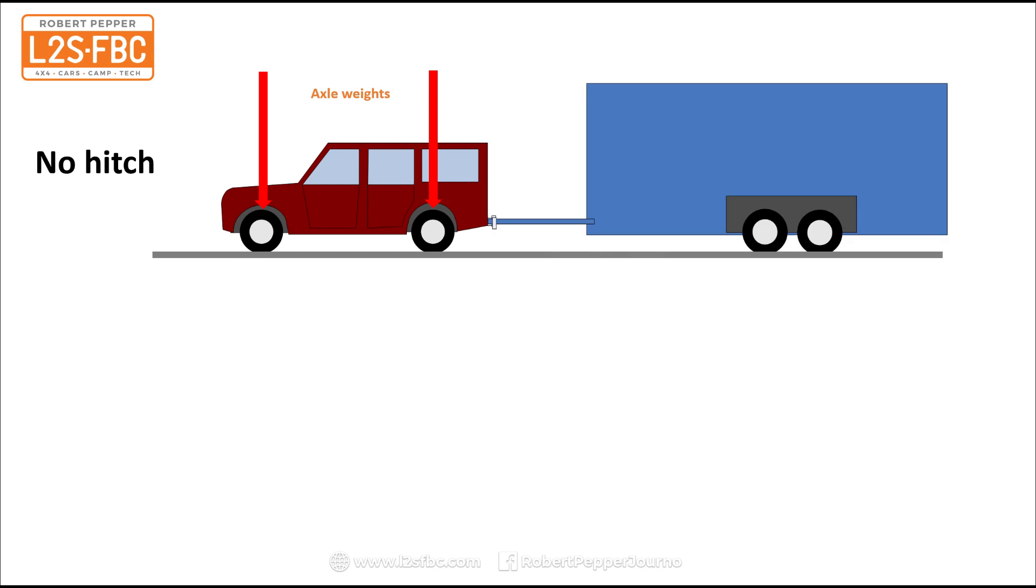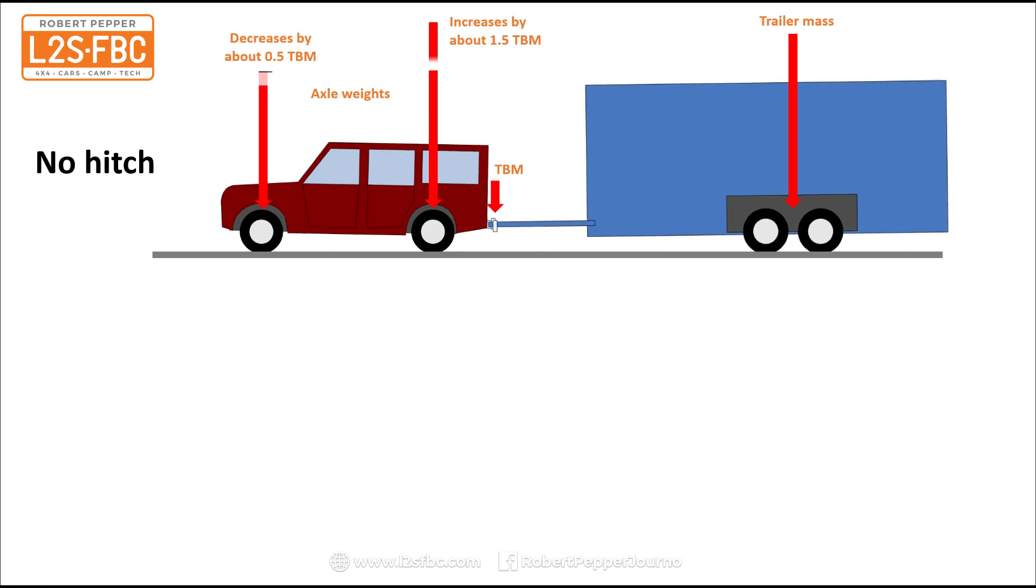Now if we add a caravan, then we've got trailer mass and we've got tow ball mass. What happens then is that the amount of weight on the rear axle increases by about one and a half times the tow ball mass, and the front axle decreases by about half the tow ball mass. In this case, the springs are pretty soft so the vehicle is sagging down.